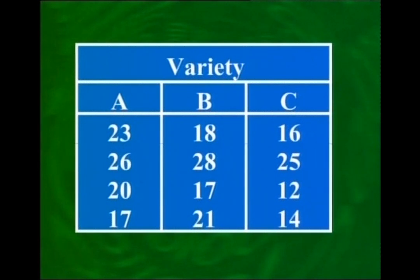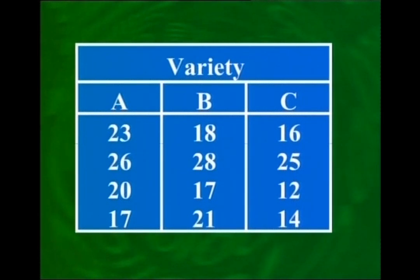Looking at the twelve data values — 23, 26, 20, 17, 18, 28, and so on — they are clearly not all the same. When we consider all twelve values together, there is overall variation. This overall variation is represented in the last row of the ANOVA table. We have also identified two specific sources: variation between varieties and variation within varieties.